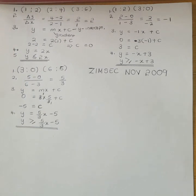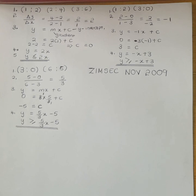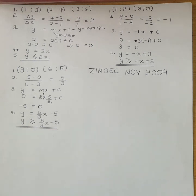This is how you find the inequalities represented on the graph. To summarize: take two coordinates along the line, find the gradient, find the Y intercept, write the equation of the line, and finally write down the inequality looking at the region that is shaded. If the region that is shaded is above the line, the inequality is less than. If the region that is wanted is greater than, they shade the region that is below.